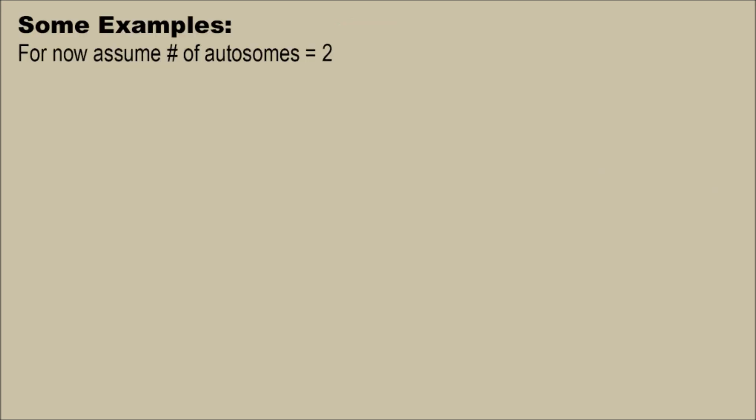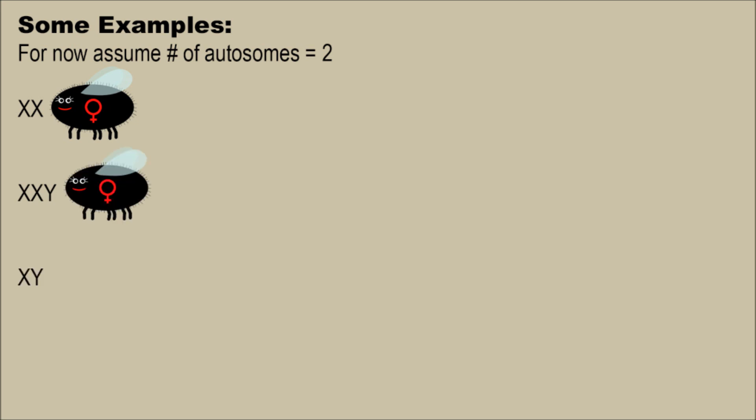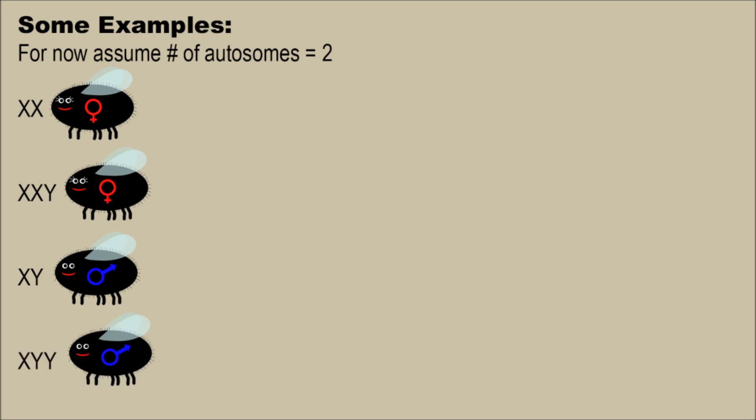Let's try some examples. For simplicity's sake, let's assume that you have two autosomes for each of the following flies. How about XX? Ratio is one to one, so female. XXY? Remember, the Y chromosome is useless — again, female. XY? One X per two autosomes — male. XYY? You can add a hundred more Ys; male.